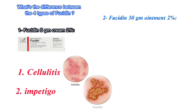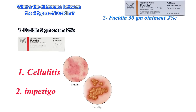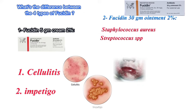Number two: Fucidin 30 gram ointment two percent is used in the treatment of primary and secondary skin infections caused by sensitive strains of Staphylococcus aureus, Streptococcus spp., and Corynebacterium minutissimum.